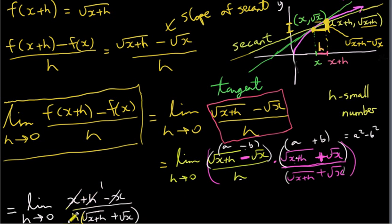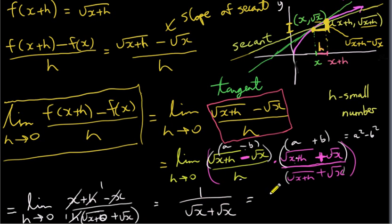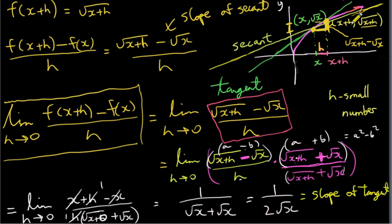We can divide above and below by h, so we have one on top. We end up taking the limit as h goes to zero of one over root x plus h plus root x. Well, that's just one over root x plus root x, which is one over two root x. Root x plus root x is just two root x. So that's the slope of the tangent. For example, if x equals three, the slope of the tangent would be one over two times the square root of three. The slope of the tangent is also written as dy dx, or f prime of x. dy dx comes from the slope of a line: y2 minus y1 over x2 minus x1, when we take a limit.